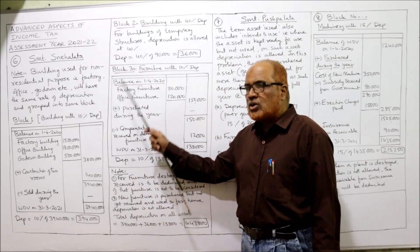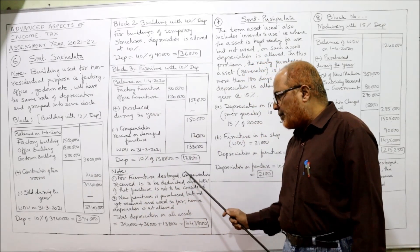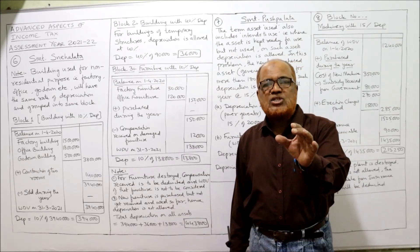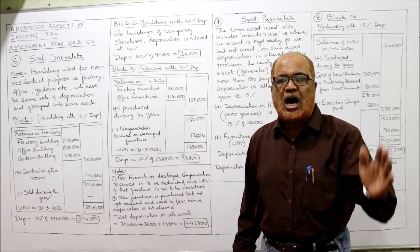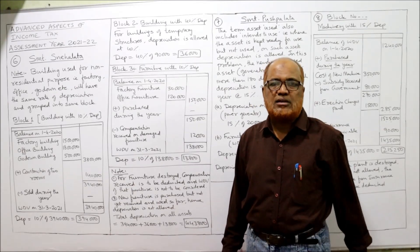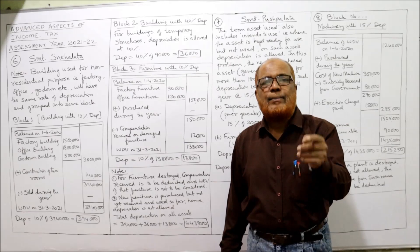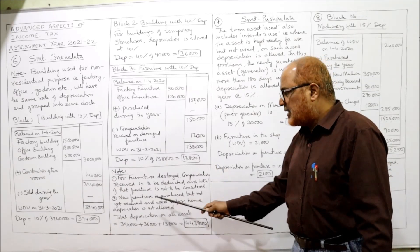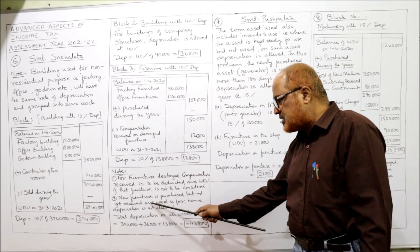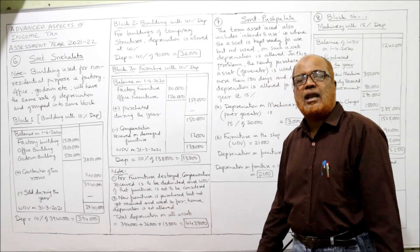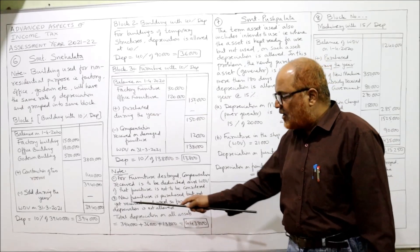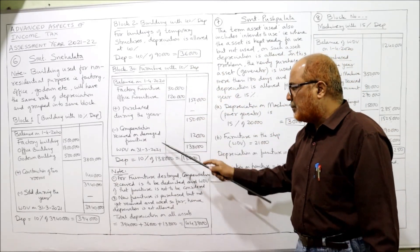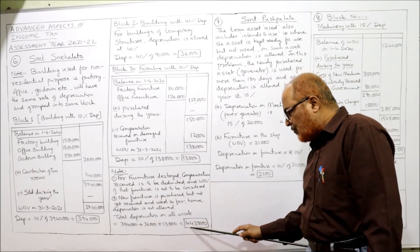Notes: for furniture destroyed, the compensation received is to be deducted and the WDV of the destroyed furniture is not to be considered — only the insurance compensation of Rs. 12,000 is deducted. New furniture purchased but not yet received and used, hence depreciation is not allowed. Total depreciation: first block Rs. 3,94,000 + second block Rs. 36,000 + third block Rs. 13,800 = total Rs. 4,43,800 for the current previous year.